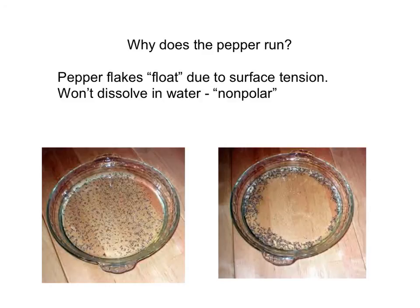But why does the pepper shoot to the side? Soap breaks down the surface tension. There was a detergent solution on the end of the toothpick, which is part of what makes soap a good cleaner. As the soap moves into the water, surface tension changes and the pepper no longer floats on top — but the water molecules still want to maintain surface tension, so they pull away from the soap and carry the pepper with them.